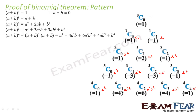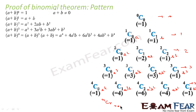We have observed that for n=4, the coefficient 1 is equal to 4C0, 4 is equal to 4C1, 6 is equal to 4C2, the next is 4C3, and the last is 4C4. Here n was 0, here n was 1, here n was 2, here n was 3, and here it was 4. So the coefficients are given by nCr where r goes from 0 to n. For n=4 this gives 4C0, 4C1, 4C2, 4C3, 4C4.